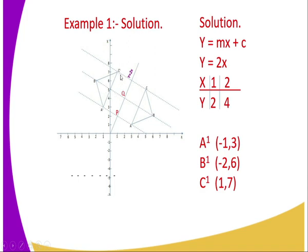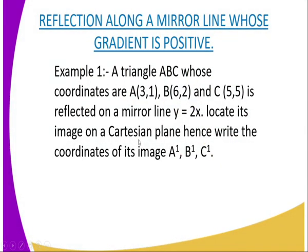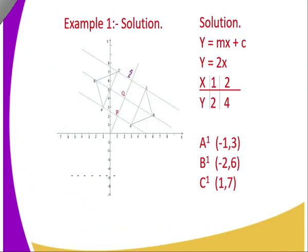And after carrying out that procedure, you will end up having the image as this one, and you join the points: A prime, you join to B prime, then you join to C prime. And after doing that, you are required to identify and write down all the coordinates of the image. You can see that in this question, you are asked to locate its image on a Cartesian plane and hence write the coordinates of its image. That is A1, B1, and C1. That is the image of the triangle ABC.